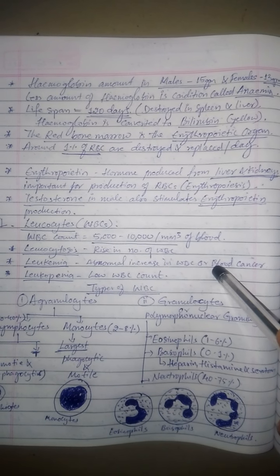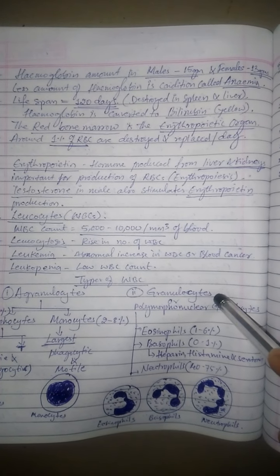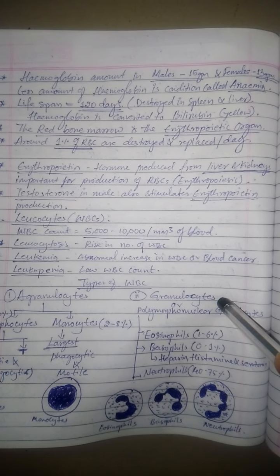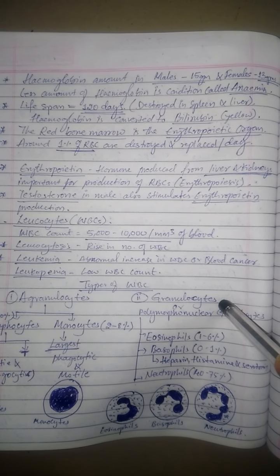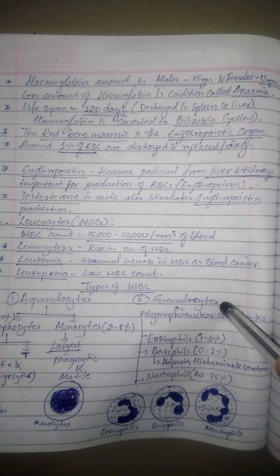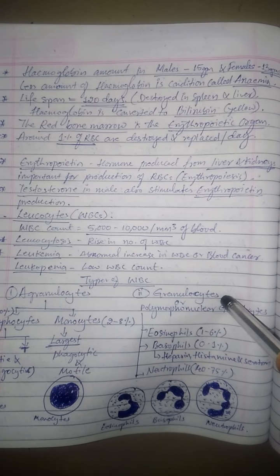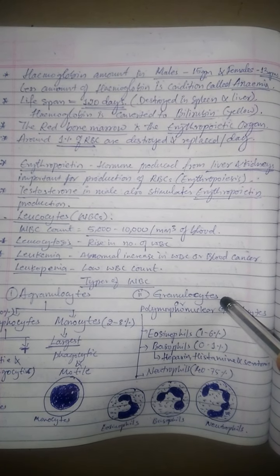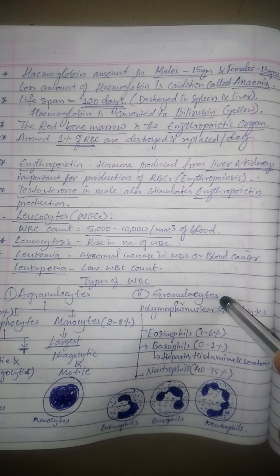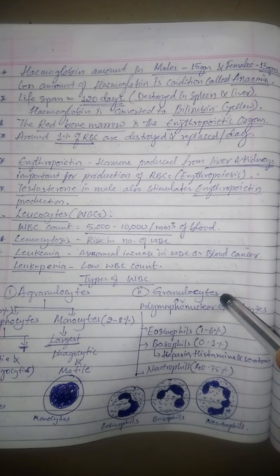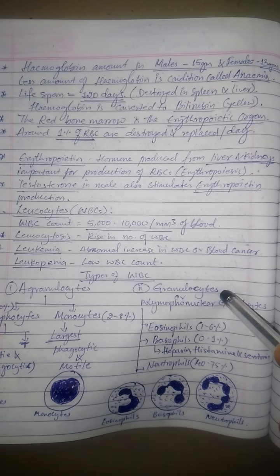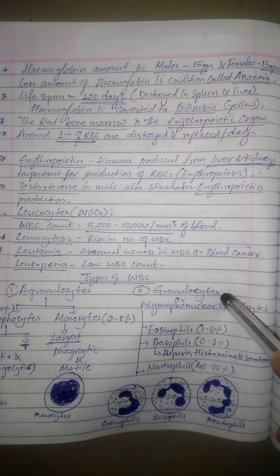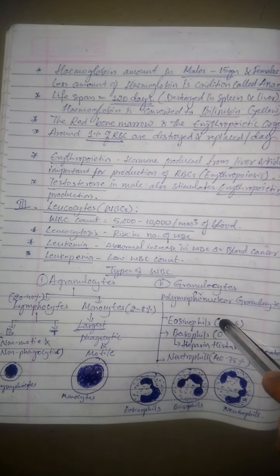Around one percent of RBCs are destroyed and replaced every day. Erythropoietin is a hormone necessary for erythropoiesis and is produced from the kidney and liver — the kidney produces the most. Testosterone in males also stimulates the production of erythropoietin, which is why the content of RBCs and hemoglobin is slightly higher in males compared to females.